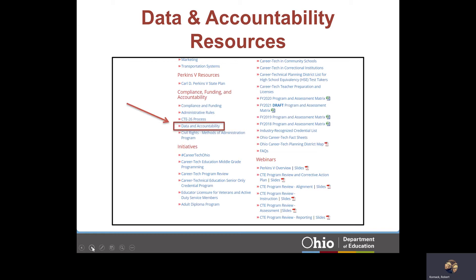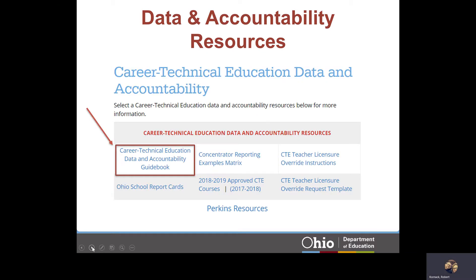Information on the new and updated accountability policies resulting from the Perkins V legislation can be found on the Office of CareerTech's homepage under the Compliance, Funding, and Accountability section. To assist districts in understanding these new and updated Perkins V accountability policies, the Office of CareerTech developed the Career Technical Education Data and Accountability Guidebook. This guidebook can be found on the Data and Accountability webpage.